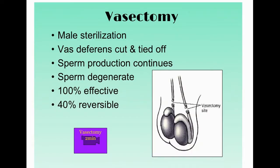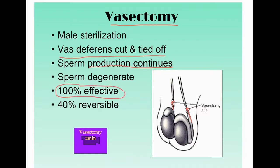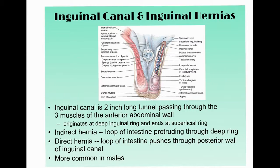A vasectomy is the male sterilization technique where the vas deferens is cut and tied off, preventing sperm from being released. Sperm production continues but sperm are reabsorbed. It is 100% effective but only about 40% reversible, so it should not be done unless you are certain.